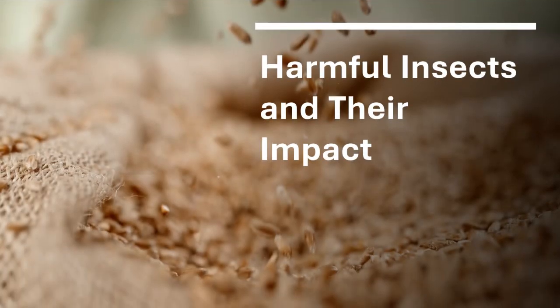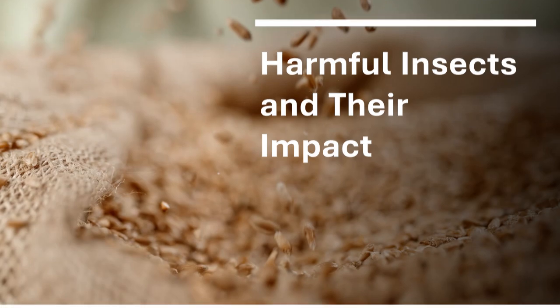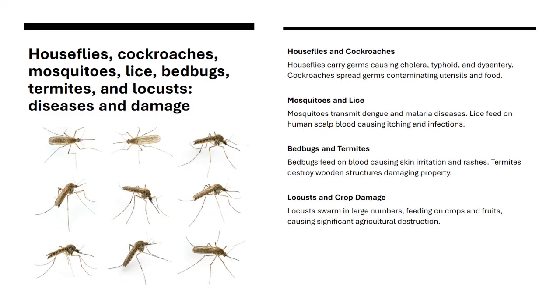On the other hand, some insects can be harmful, causing disease and damage to property and crops. Houseflies and cockroaches spread disease-causing germs. Mosquitoes transmit dengue and malaria. Lice cause itching and infections. Bedbugs cause skin rashes, termites destroy wood, and locusts damage crops and fruits.